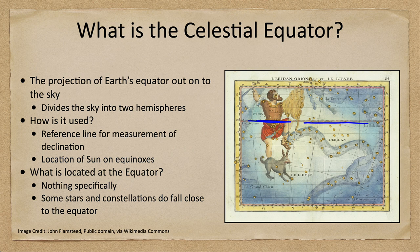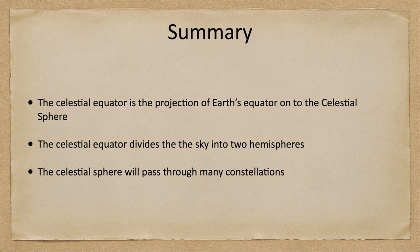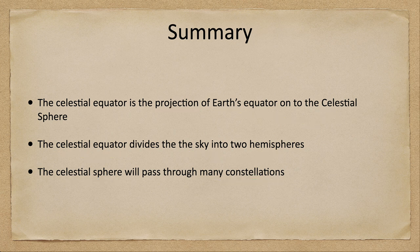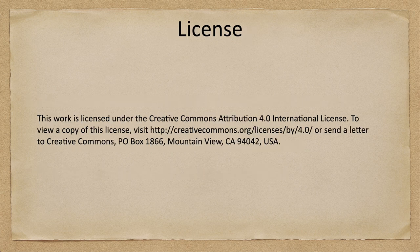In summary, the celestial equator is the projection of Earth's equator onto the celestial sphere. It divides the sky into two hemispheres and passes through many different constellations, with many stars close to it at any given time. However, there is nothing specifically in the sky that will highlight it and tell us exactly where it is. That concludes this discussion on the celestial equator — we'll be back next week to talk about another part of the celestial sphere. Have a great day everyone, and I will see you in class.